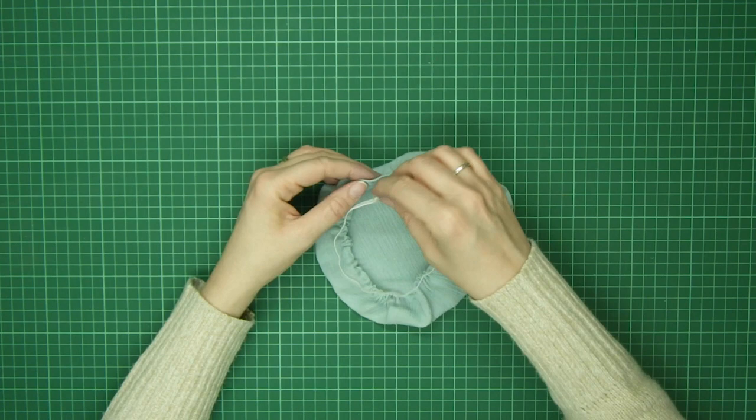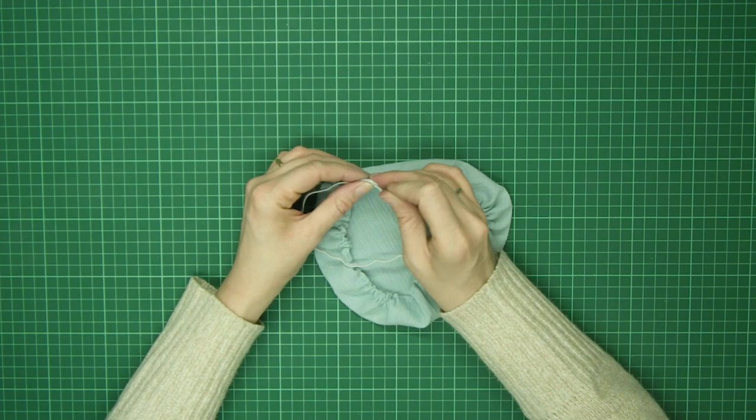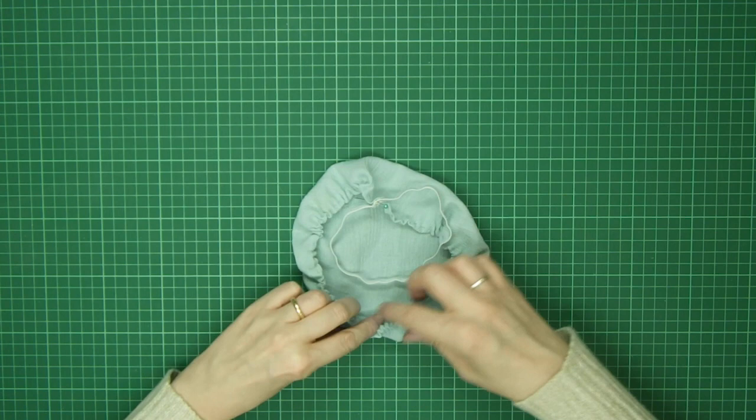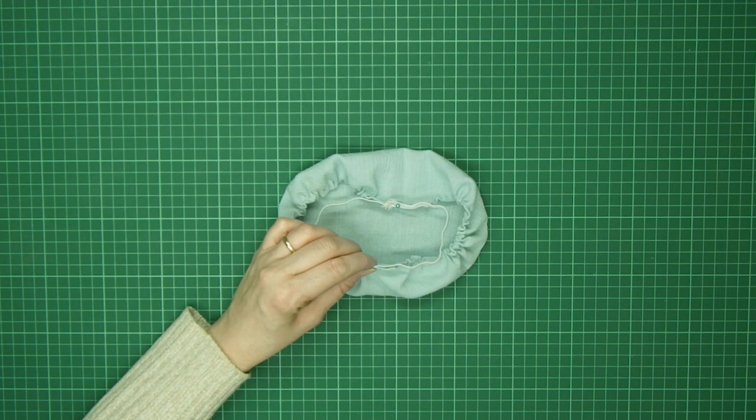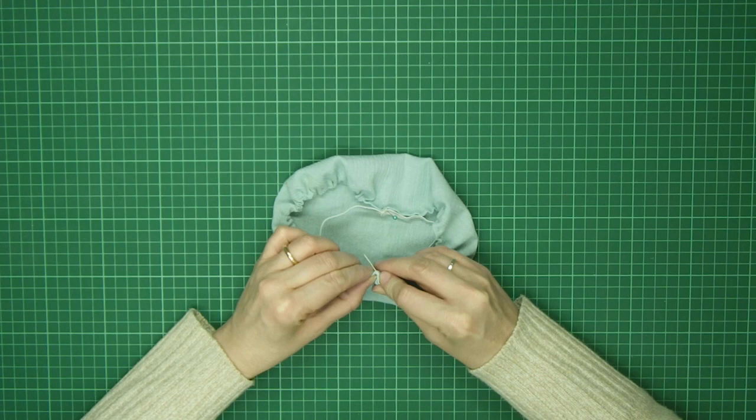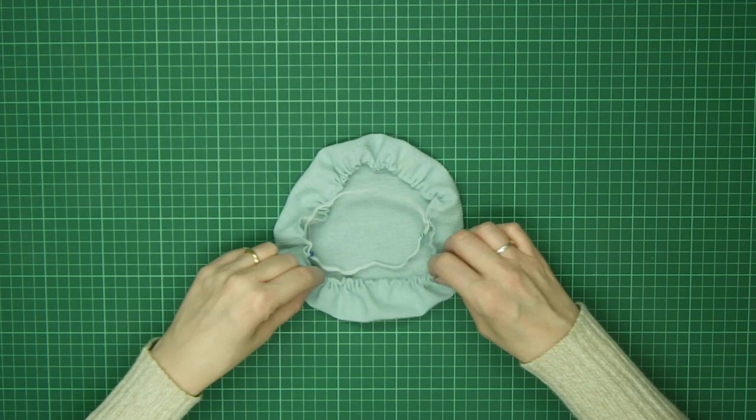So we're pinning this onto our folded over edge, so it's on the wrong side. We've folded over just a five millimeter seam allowance. If you've got it straight from ungathered it's the same, it's a five millimeter seam allowance all the way around. I'm pinning it on one side and then on the opposite side so that I can make sure that my gather is even all the way around.